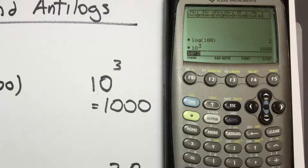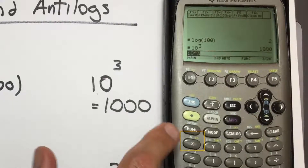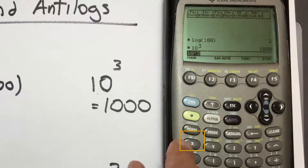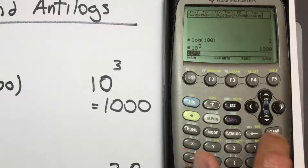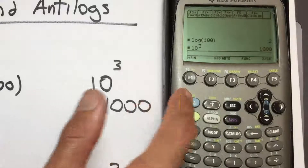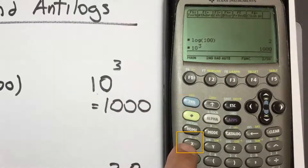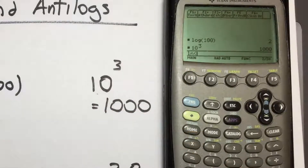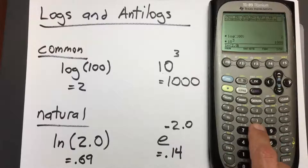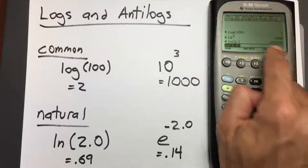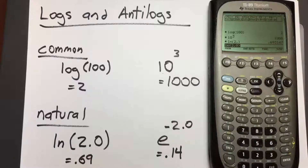To find the natural log, we do have a good button for that. Above the letter x key, in the blue, you can see LN. Clear the bar, press 2nd, and press the x key. Now LN is inside the bar. Enter 2.0 inside the parentheses, close the parentheses, and press enter. We get 0.693, which we round to 0.69.